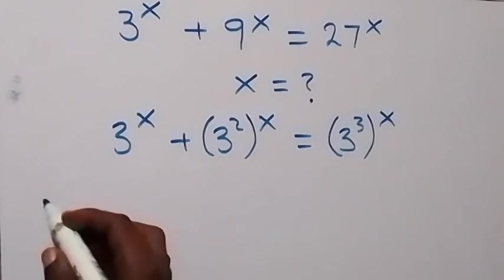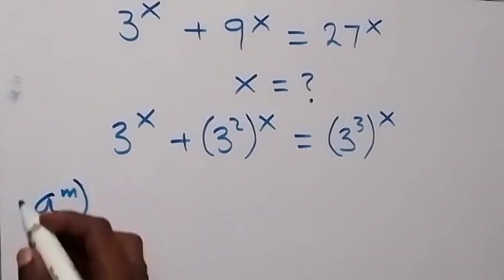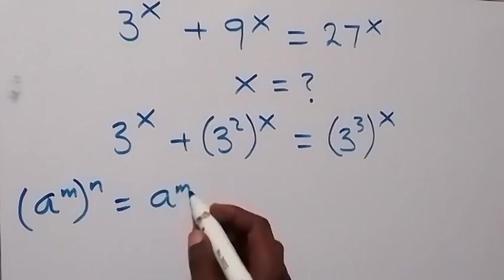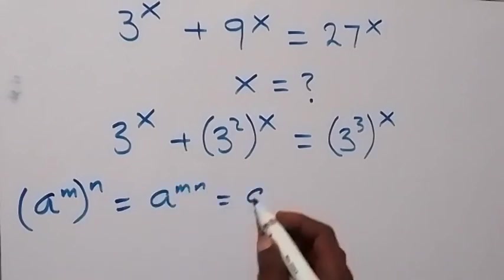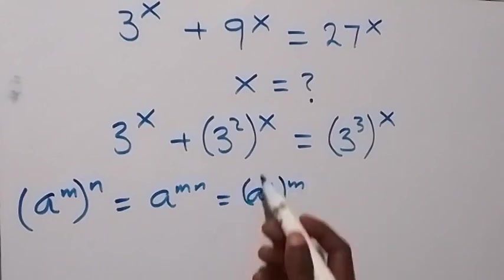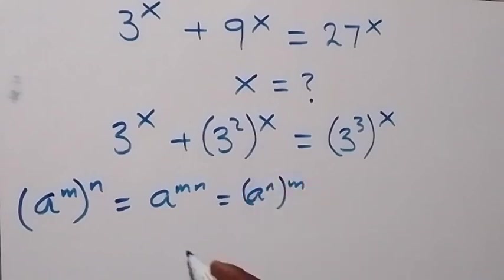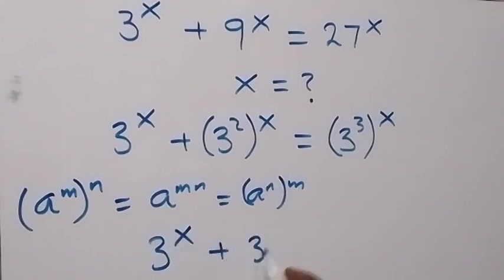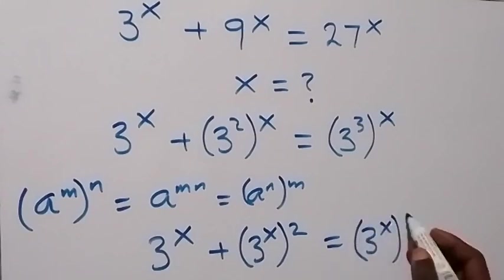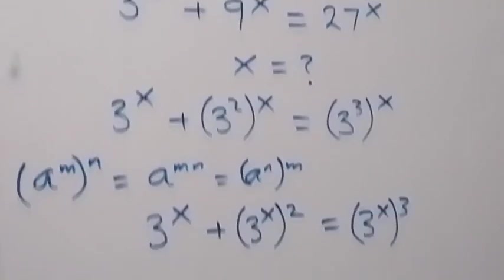From the laws of indices, when we have a raised to power n, raised to power m, this is the same as a raised to power mn. We can interchange these powers. So this becomes 3 raised to power x, plus 3 raised to power x raised to power 2, which equals 3 raised to power x raised to power 3.